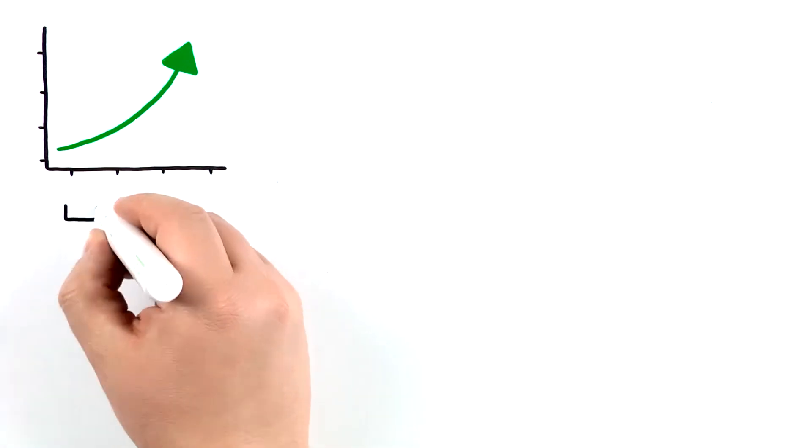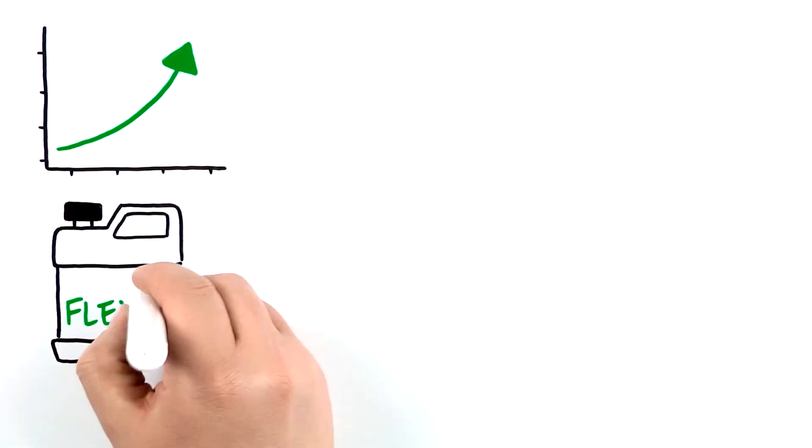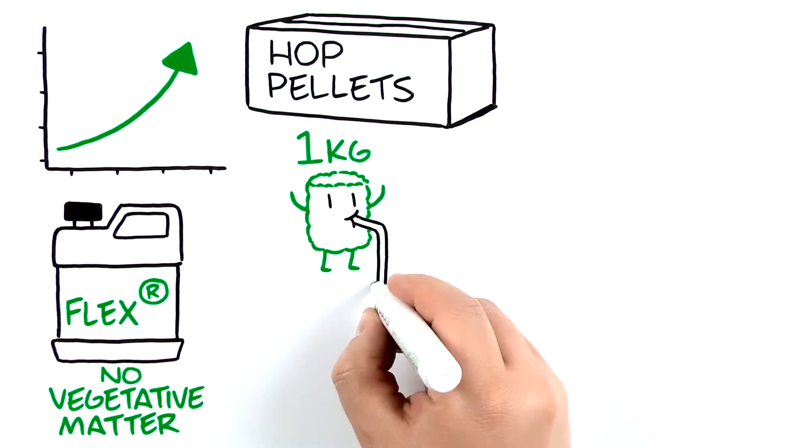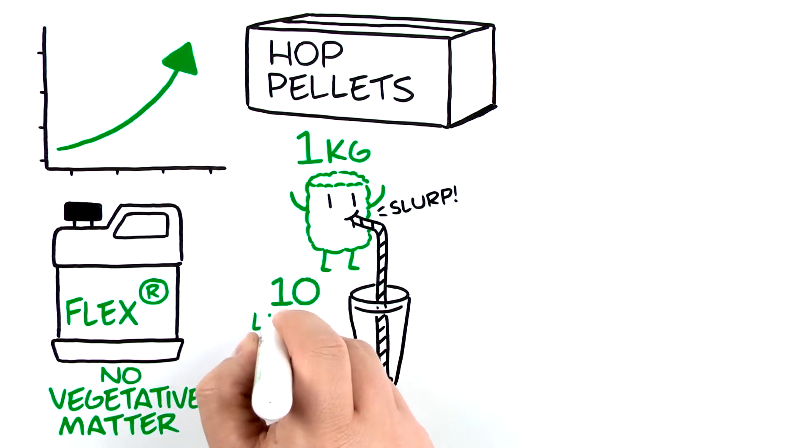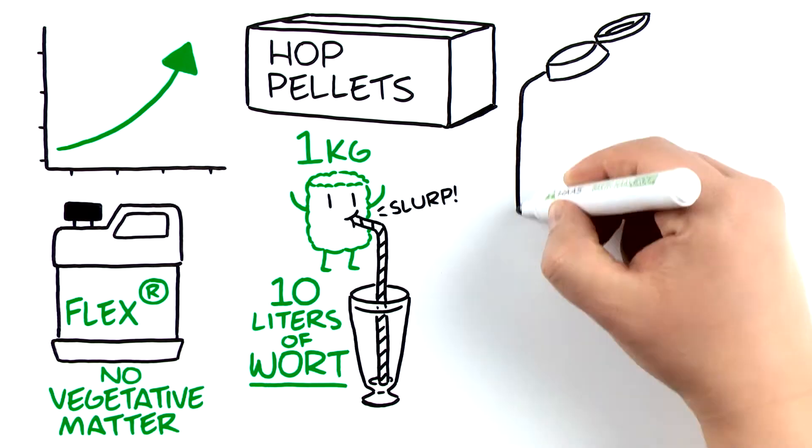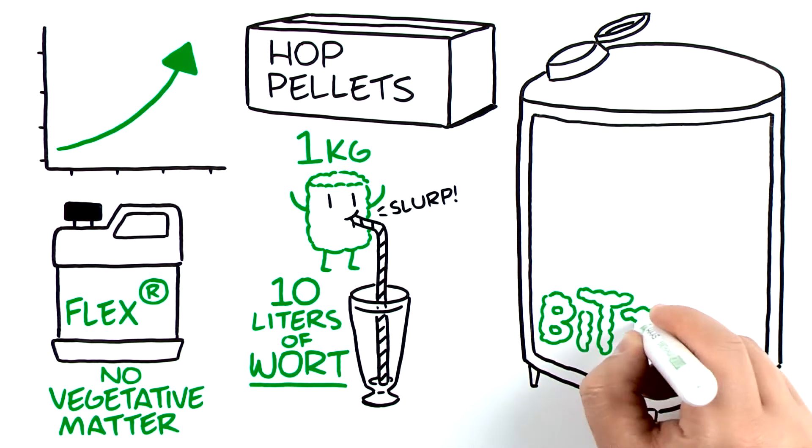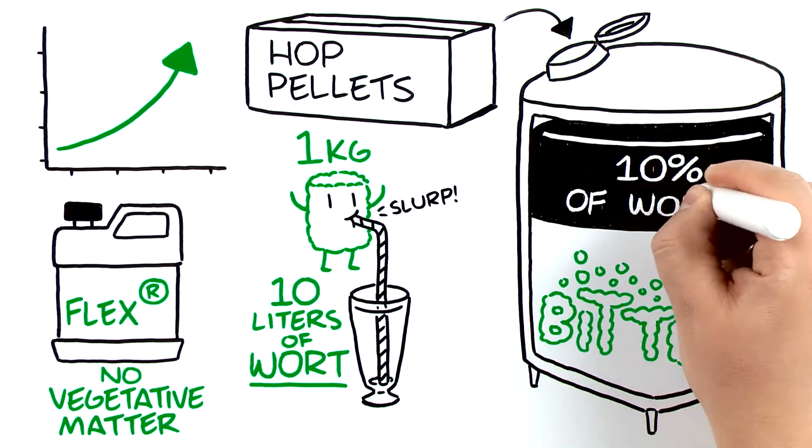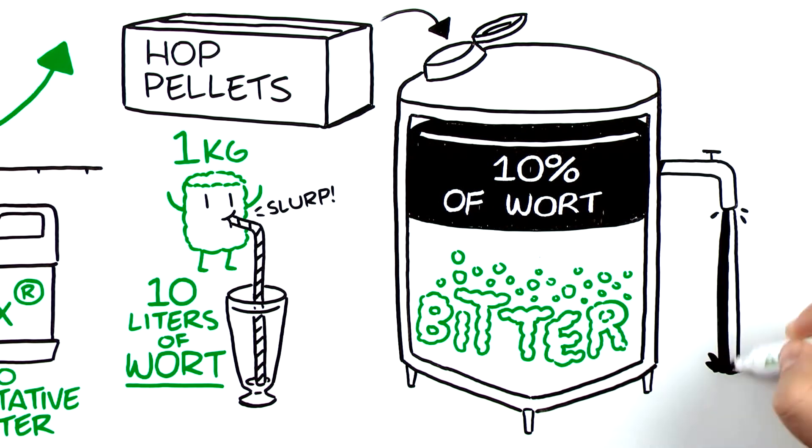If you're interested in improving your brew house efficiencies, turn to FLEX over pellets. FLEX has no vegetative matter. One kilogram of hop pellets can absorb up to 10 liters of your precious wort. Depending on the type of beer you brew, your brewing procedures, and your production setup, wort losses of 10 percent or more will occur when using pellets in the brew kettle.